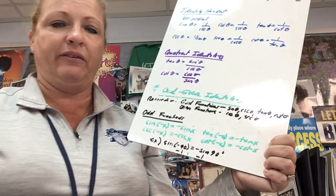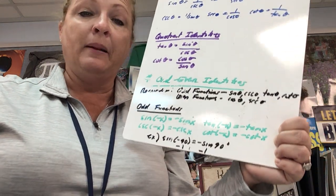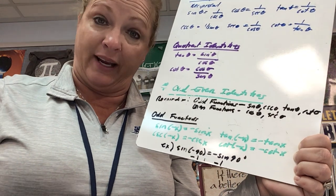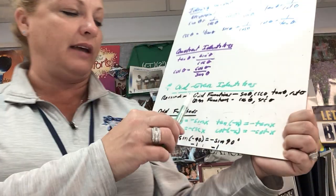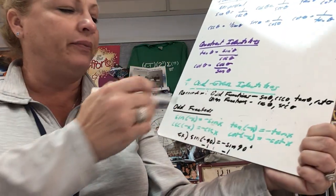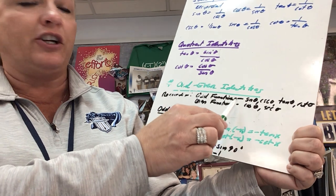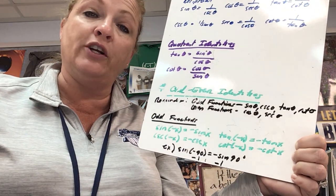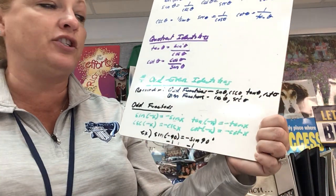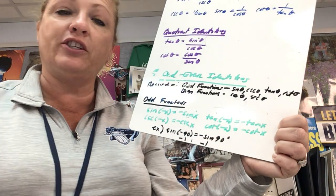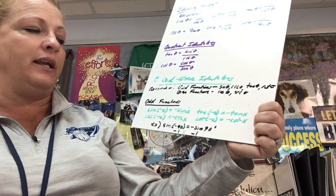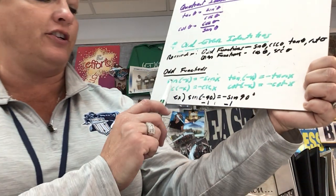Odd and even functions — not used as often, but this connects to how we classified graphs as odd and even. Odd functions are symmetric to the origin. From our trig graphs, sine, cosecant, tangent, and cotangent are all odd functions. Even functions are symmetric to the y-axis.